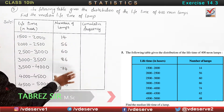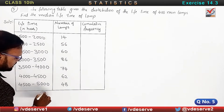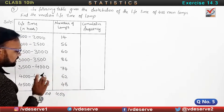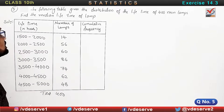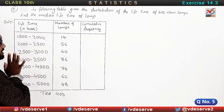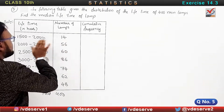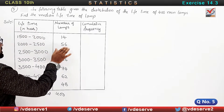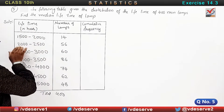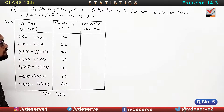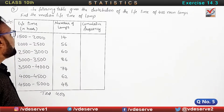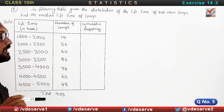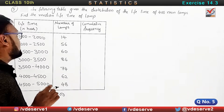So here we have 400 lamps total. Number of lamps and lifetime in hours: 14 lamps have a lifetime of 1500 to 2000 hours, 56 lamps have a lifetime of 2000 to 2500, and so on. We have to find the median. So now we have to draw the same table with a third column for cumulative frequency.